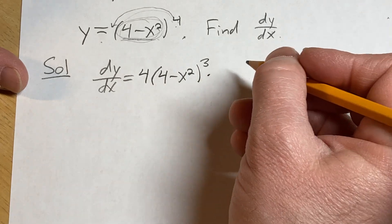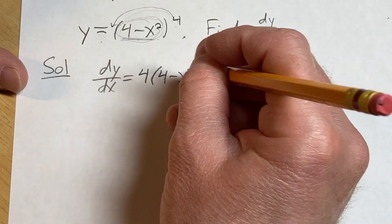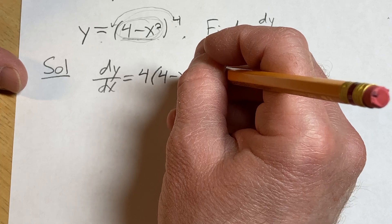times the derivative of the inside, which in this case, the derivative of 4 is 0, the derivative of negative x squared is negative 2x.